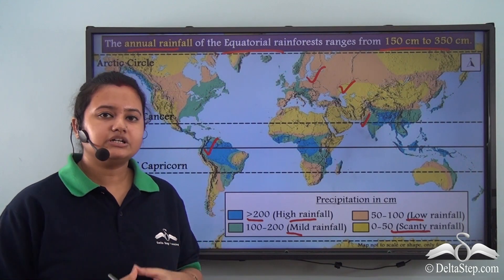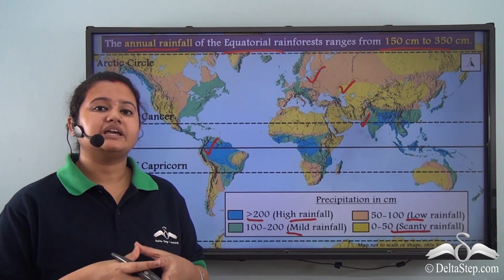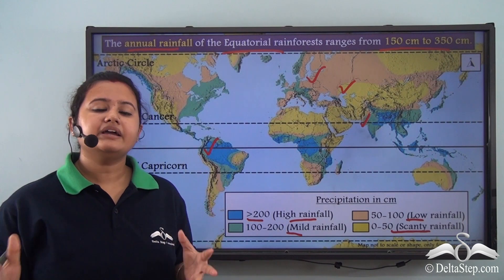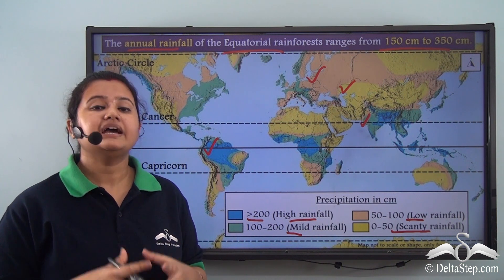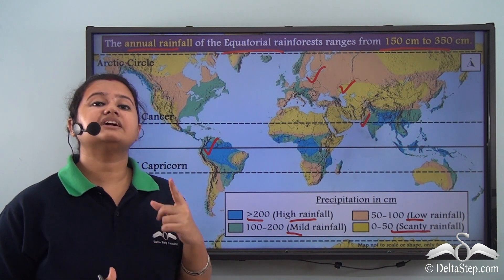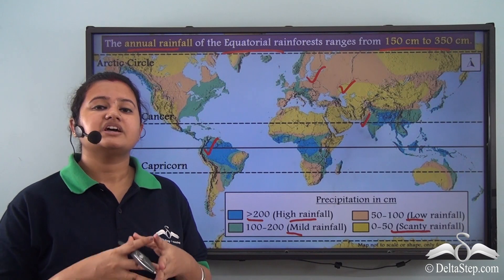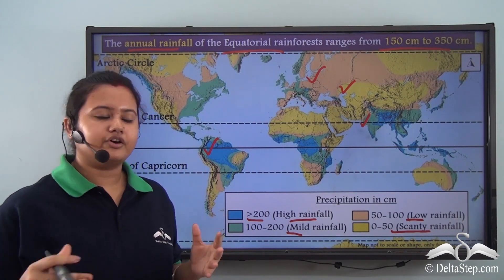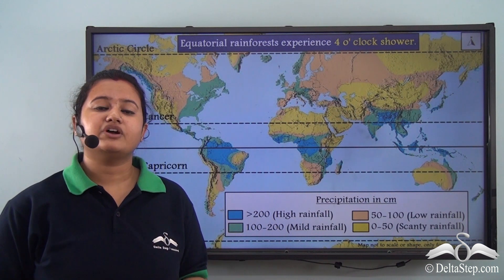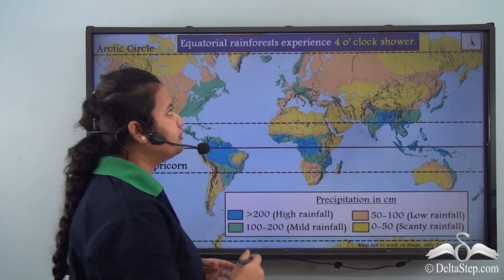Rainfall plays an important role in the development of these rainforests. This high amount of rainfall is also sometimes accompanied by thunder and lightning. In fact, there is no particular month — not a single day — when it does not rain in this region. The equatorial rainforest receives rain every day at around 4 o'clock, and therefore this rainfall is also known as the 4 o'clock shower.